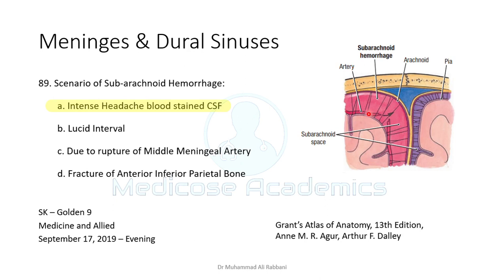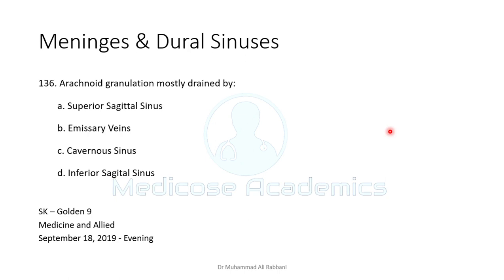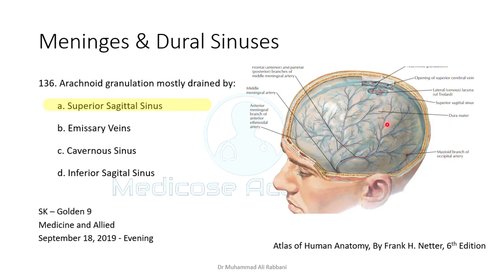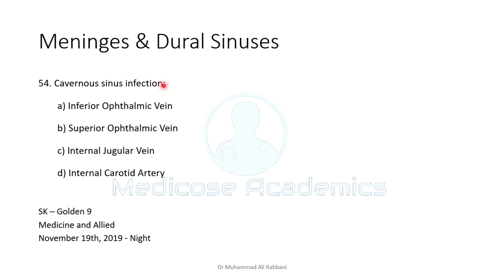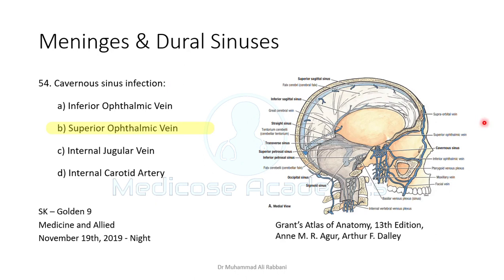Arachnoid granulations drain into a number of superficial sinuses, most commonly the superior sagittal sinus via lateral extensions known as lateral lakes. Regarding cavernous sinus infection: it travels from the surface of the face through the superior ophthalmic vein, which connects directly to the cavernous sinus. The inferior ophthalmic vein either drains through the superior ophthalmic vein or through the pterygoid plexus — there is no direct connection to the cavernous sinus.